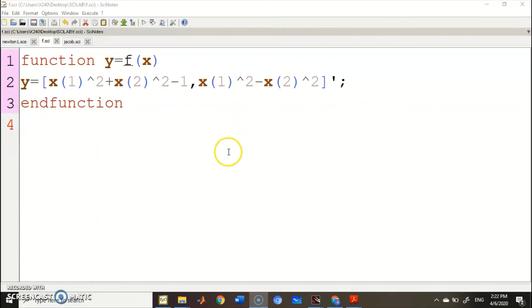I want to explain the Scilab code on page 174. As you can see here, first you need a function file. Make sure you save it as F.SCI. This is the function file.